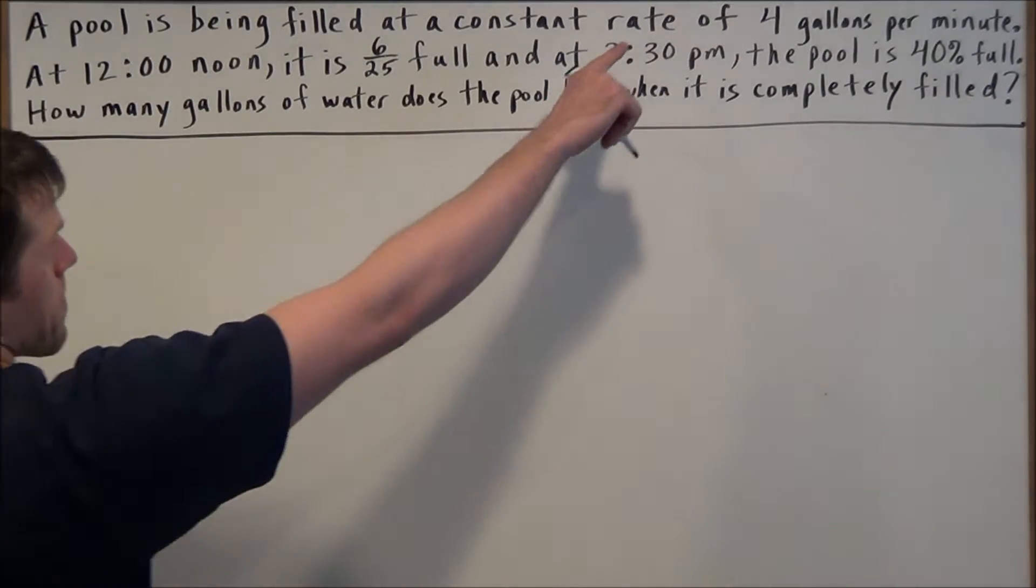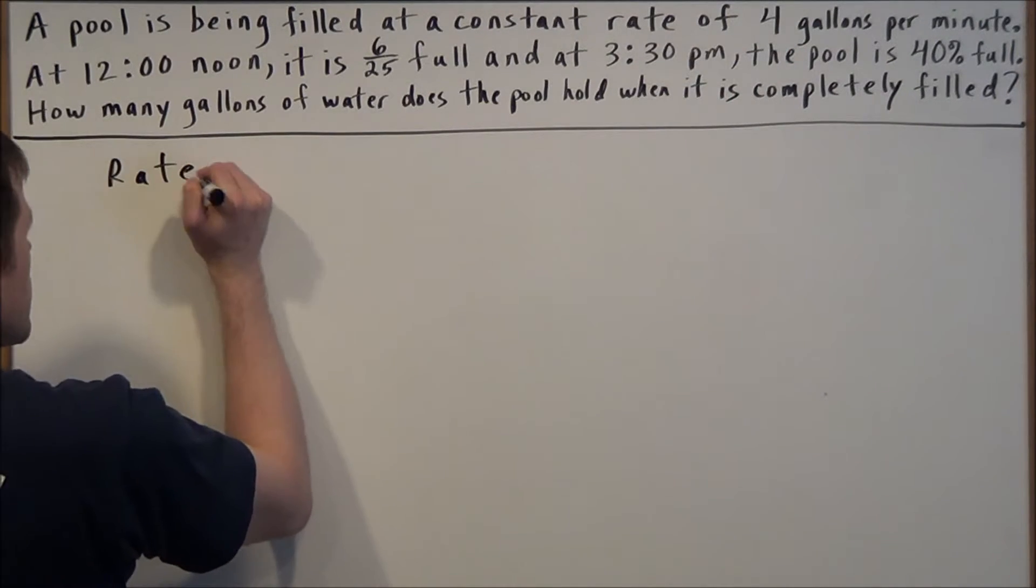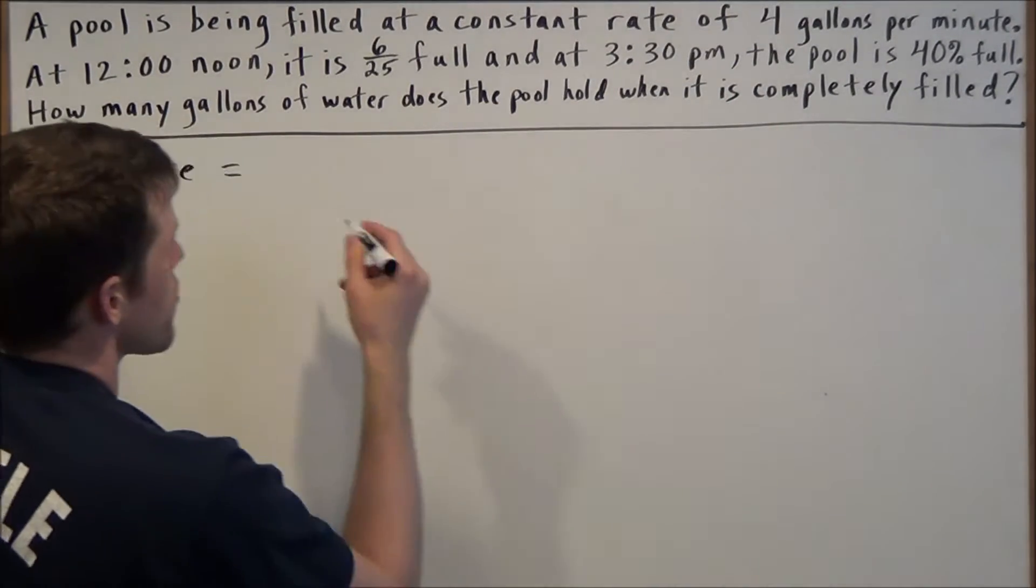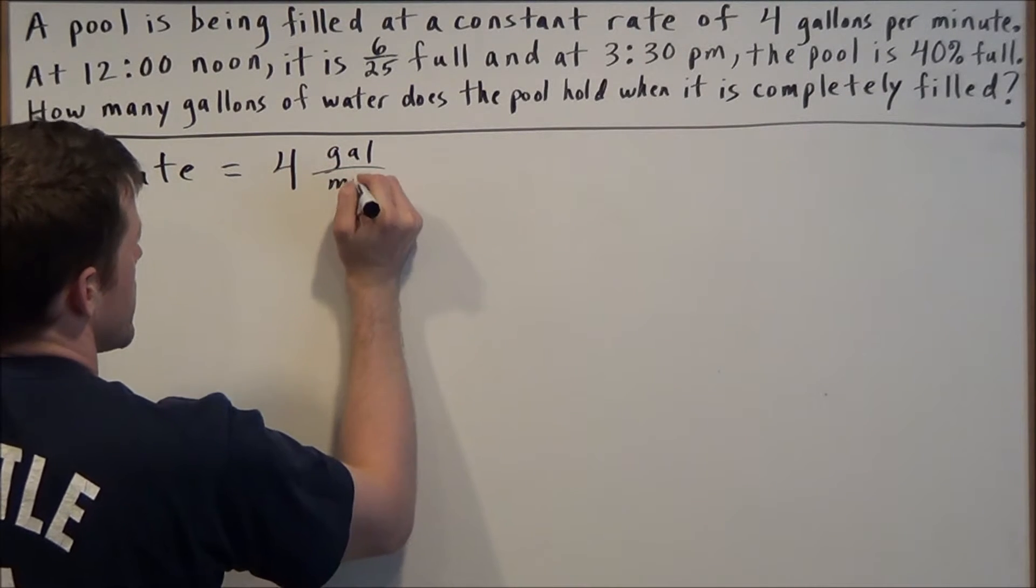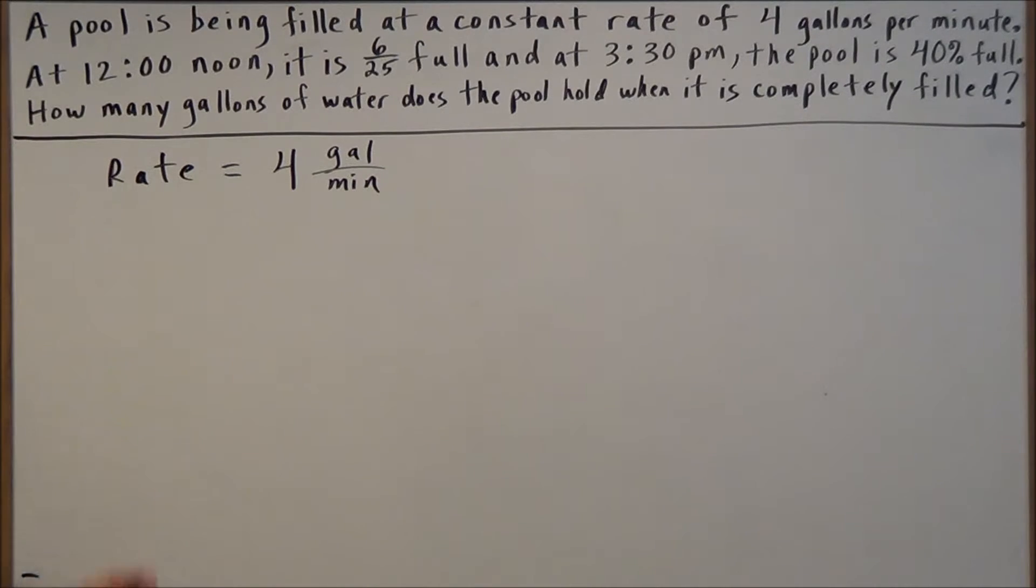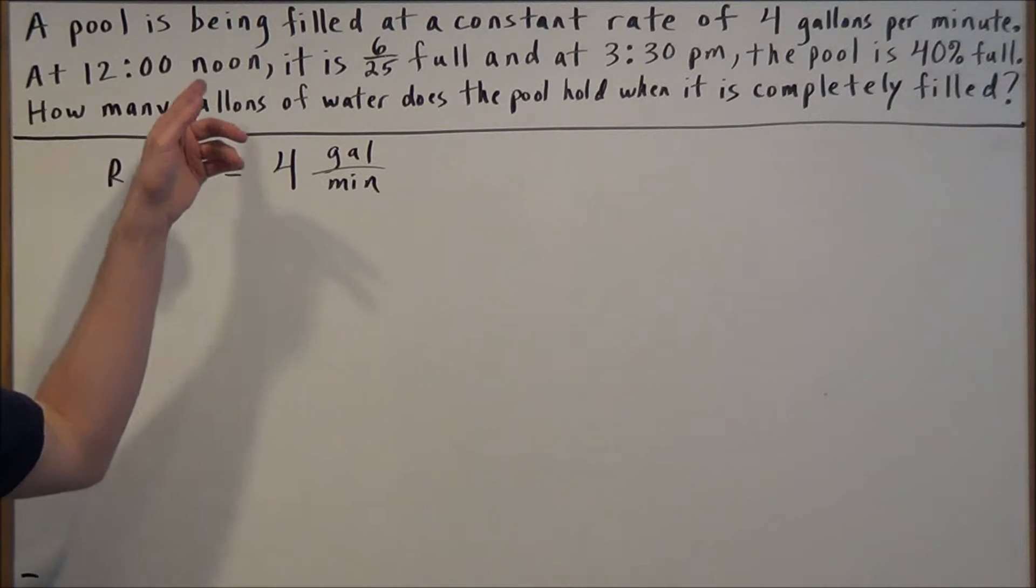The rate in this problem is equal to 4 gallons per minute, so we're just going to write this off to the side. And then, considering it's a problem involving time, we can make a little timeline to map the change here.